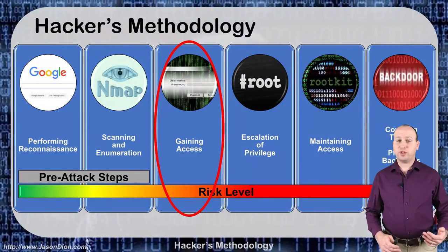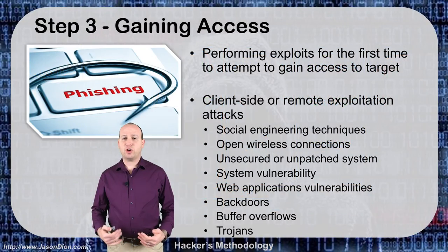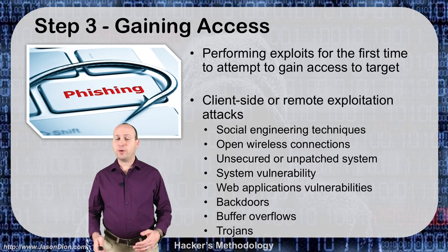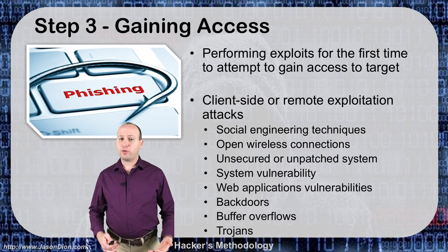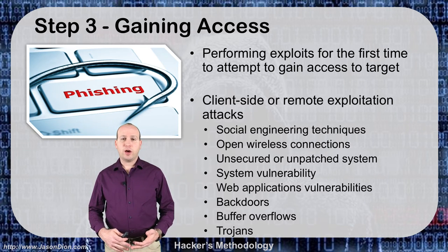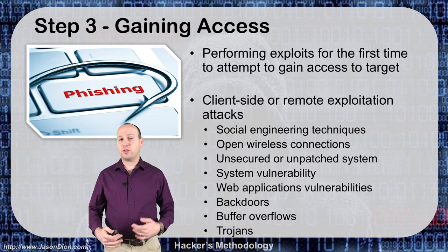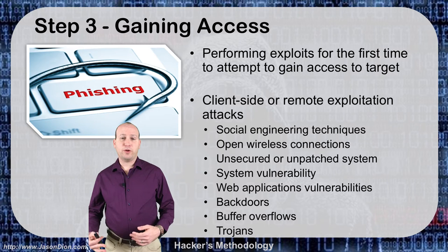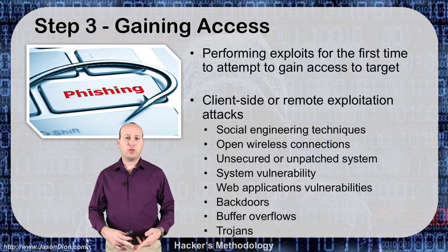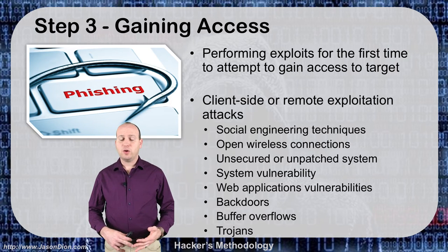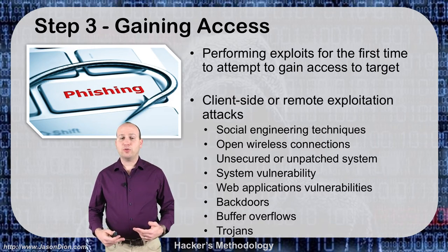In our third step, we're doing exploitation and gaining access. We've spent probably 80 to 90% of our time between phases one and two at this point, and now we actually launch the attack. This is where we might throw an exploit, conduct a social engineering campaign — something very active — and now our risk level has gone up because the organization can potentially see us. We're doing either client-side or remote exploitation: social engineering, launching exploits, sending malicious code that attacks a bug or vulnerability, putting out viruses or Trojans.